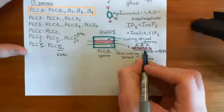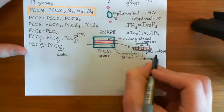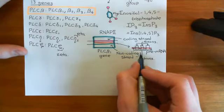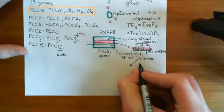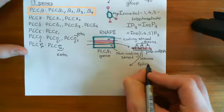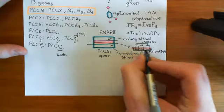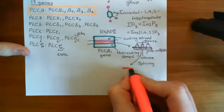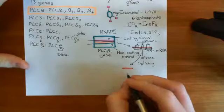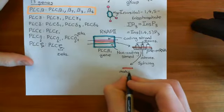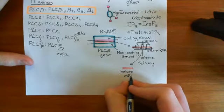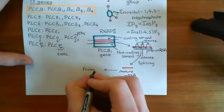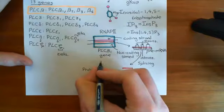Before the pre-mRNA can go through a ribosome, the introns must be cut out and the exons re-joined together. This process of cutting out the introns and re-gluing the exons back together is known as splicing. It produces a much smaller, mature mRNA consisting only of the exons joined together. This mature mRNA can then go on to be translated into a protein — a polypeptide — through the process of translation.